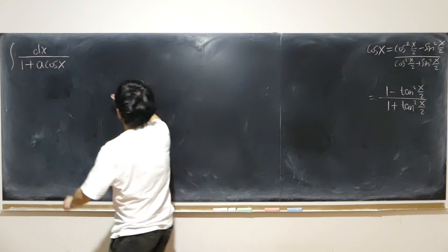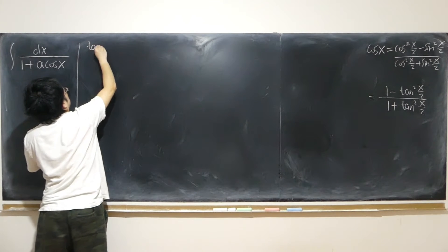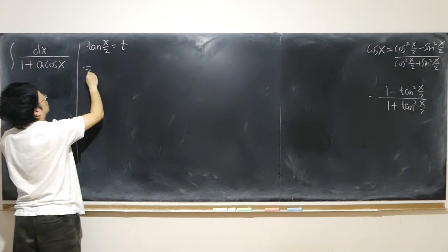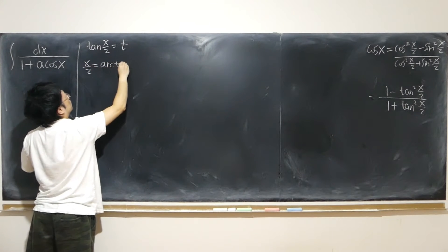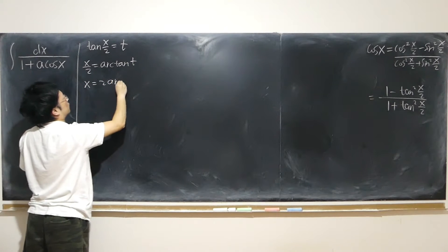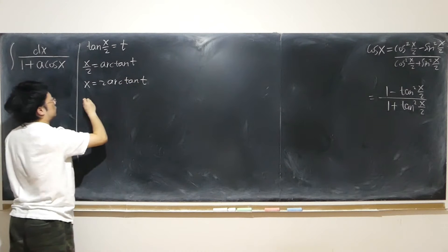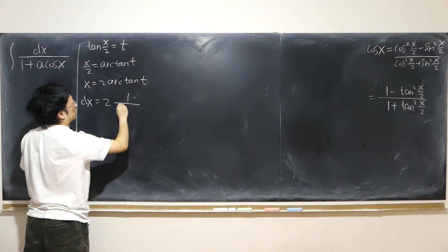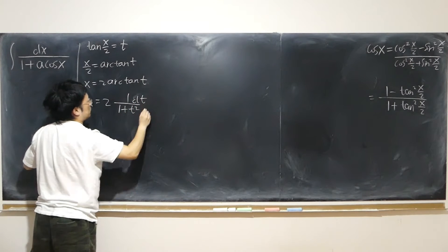If I let tangent of (x/2) equal to t, then x/2 equals arctan(t), so x equals twice arctan(t). Therefore dx equals 2 times 1 over (1 plus t squared) dt.